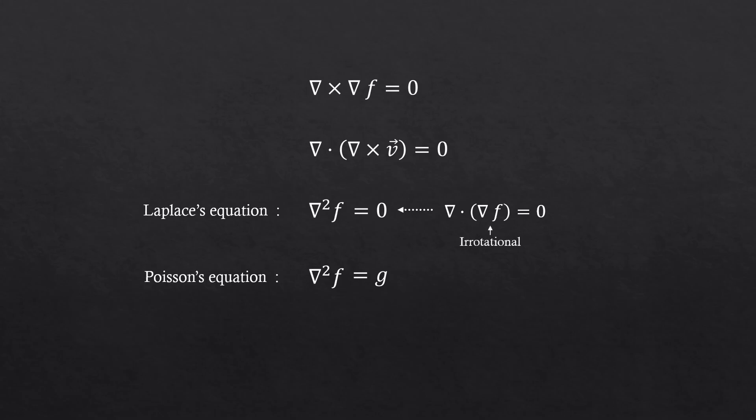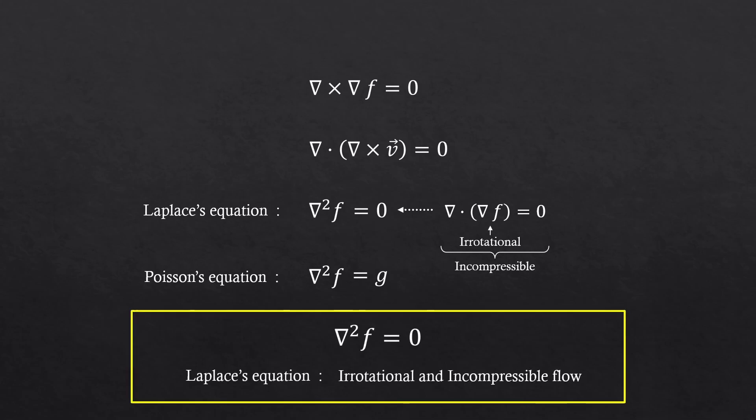First of all, we learned that the gradient of a scalar is always irrotational. But as you can see, the divergence of it is zero. We forced it to be zero. Which means we just made it incompressible. We made the Laplace's equation to talk about something that is not only irrotational, but also incompressible.